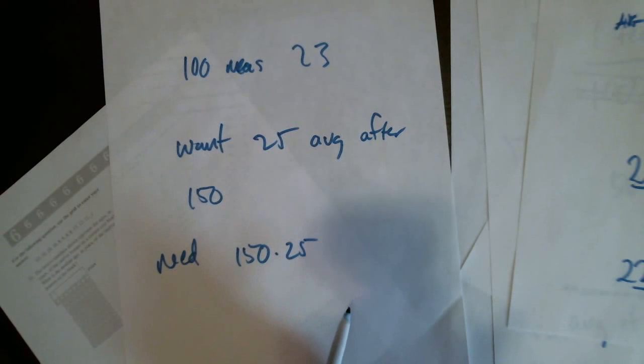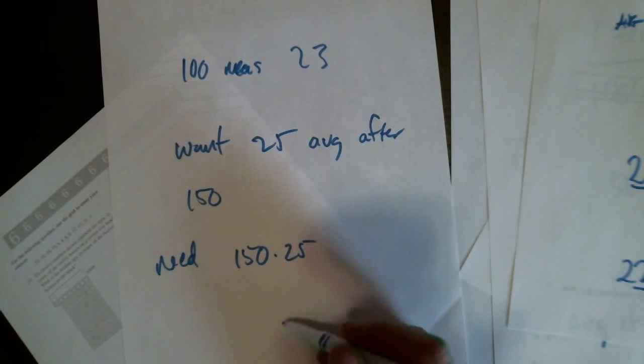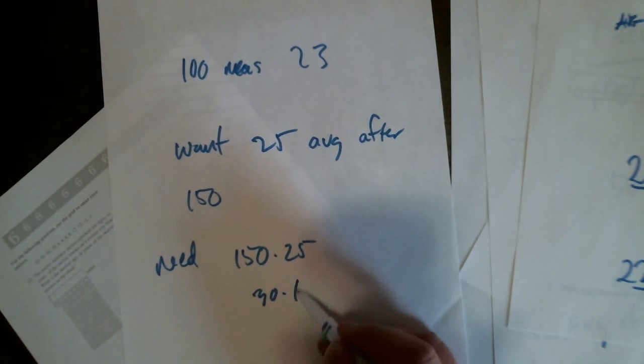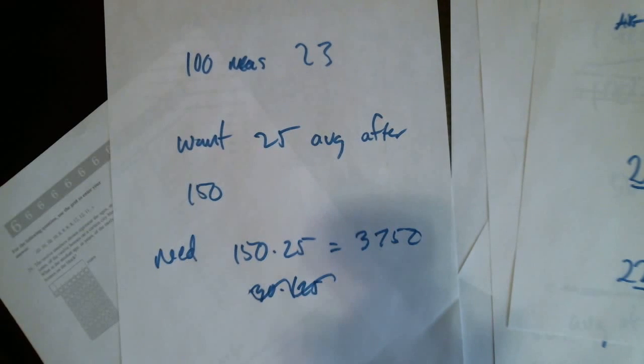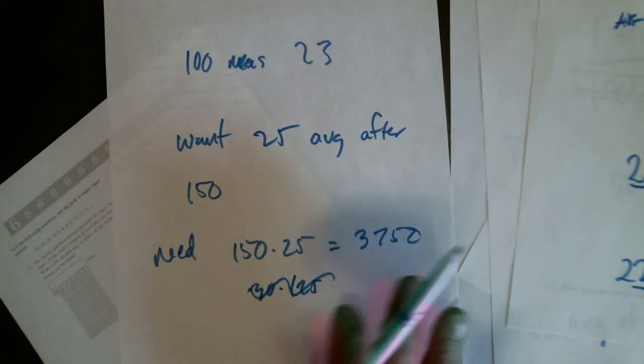And a hundred and fifty times twenty-five is... some number that... this is like thirty times one-twenty-five. It's three-seven-fifty. I'll put it in. One-fifty times twenty-five is three-seven-fifty. That's right. Okay.